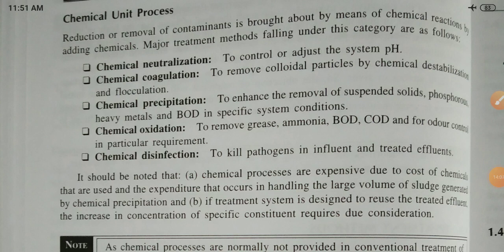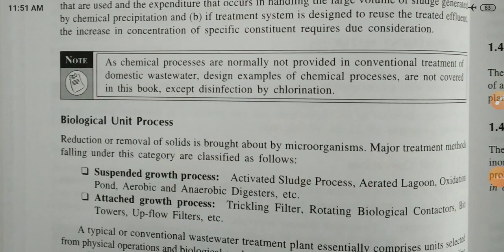It should be noted that chemical processes are expensive due to the cost of chemicals used and the expenditure incurred in handling the large volume of sludge generated by chemical precipitation. The treatment system is designed to reuse the treated effluent, and the increase in concentration of specific constituents requires due consideration. Chemical processes are normally not provided in conventional domestic wastewater treatment design.